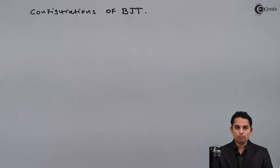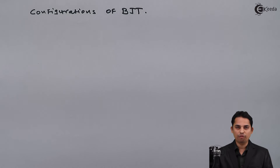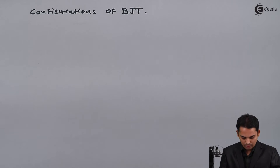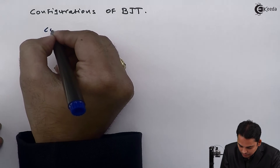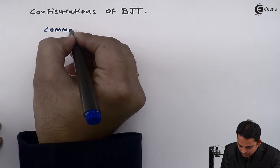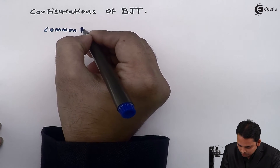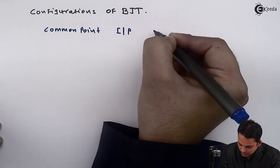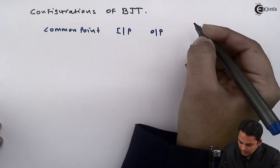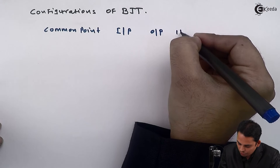In order to apply input and output to BJT, one terminal is made common. The remaining two terminals serve as input and output respectively. We can organize this by noting the common point, the input terminal, the output terminal, and the name of the configuration.